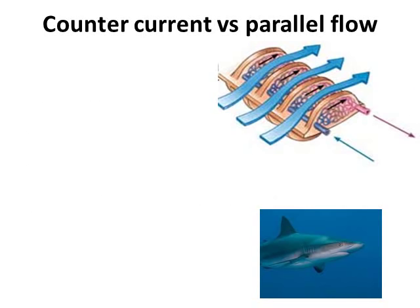This image shows the gills in cartilaginous fish, such as the shark. The blue arrows represent the flow of water, and we can see the direction the blood is moving on the gill plates. Deoxygenated blood comes in on one side, picks up oxygen from the water, and leaves on the other side. This type of flow is called parallel flow, because the blood and the water are flowing in exactly the same direction. Parallel flow isn't particularly efficient.